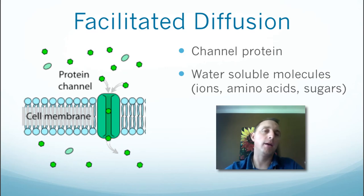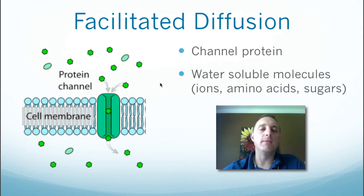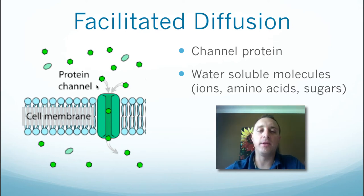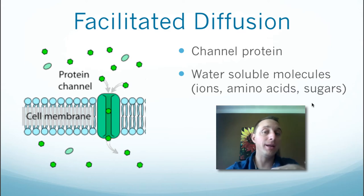This is still passive transport — the cell is not putting out any energy. Molecules move down the concentration gradient, from high concentration to lower concentration. Things that move this way include water-soluble molecules. Since the inside of the membrane is very hydrophobic, the channel protein provides a safe passage. Examples include ions, amino acids, and sugars — a little too big to fit between phospholipids but able to pass through channel proteins.